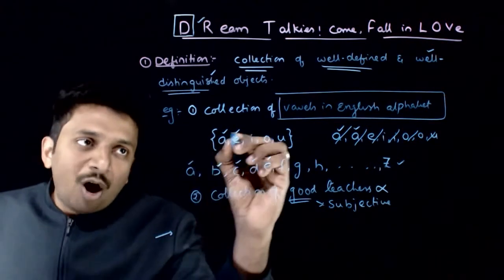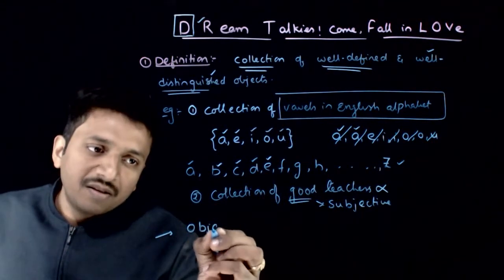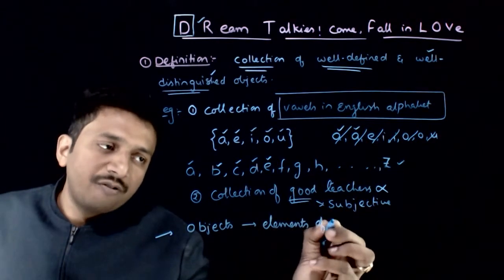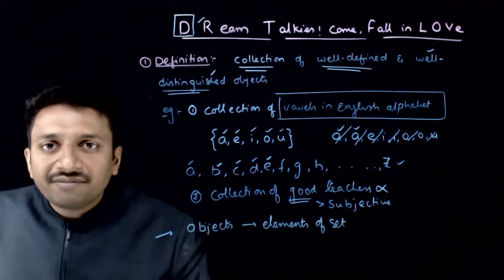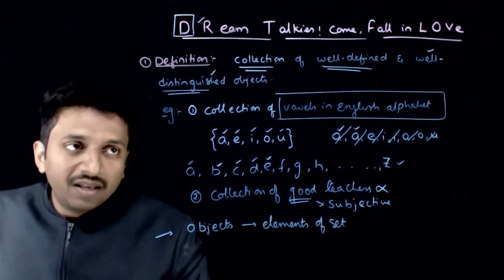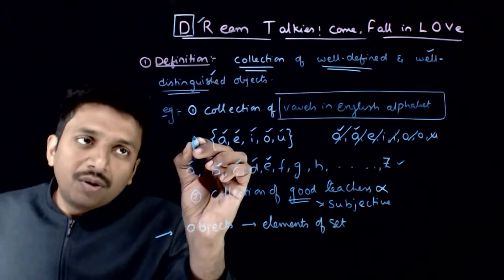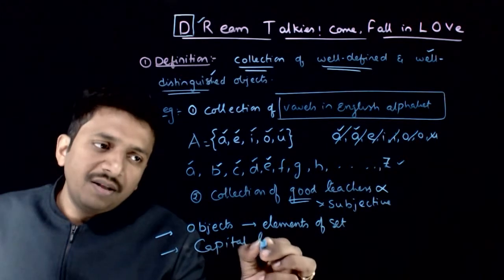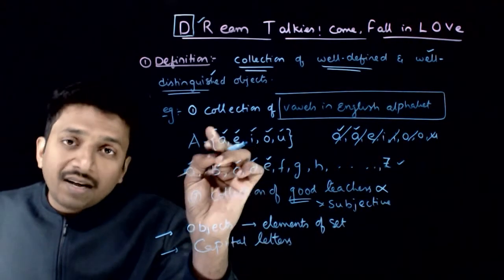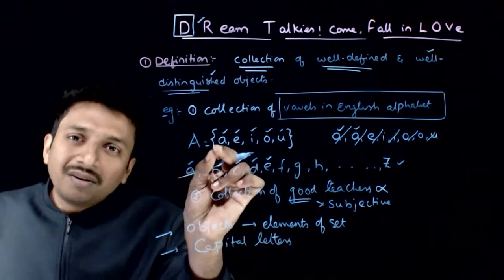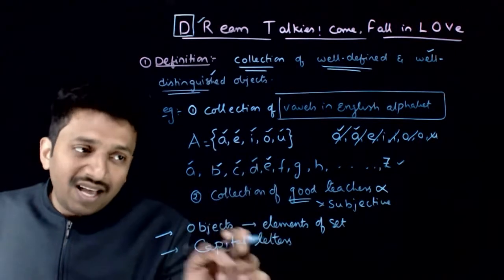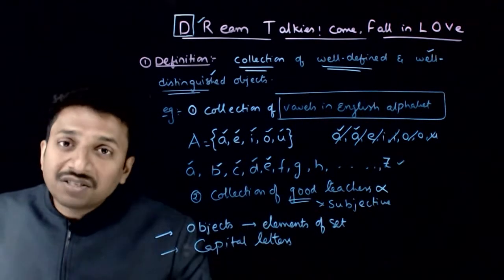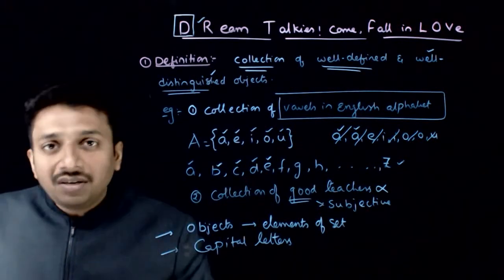The objects in the set are called elements. The objects present in the set are usually called elements of the set. This set has 5 elements. Sets are usually denoted by capital letters, and the objects of the set are enclosed in flower brackets, using a comma for each object.